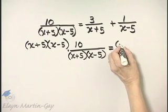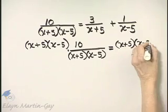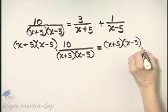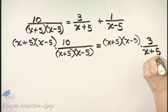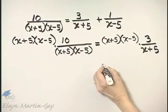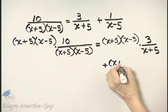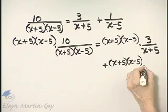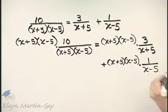Same thing. x plus 5 times x minus 5. Now that will be times what? Times this term, 3 over x plus 5. And then we'll continue on so it doesn't get too wide, plus, again, x plus 5 times x minus 5 times the last term, 1 over x minus 5.